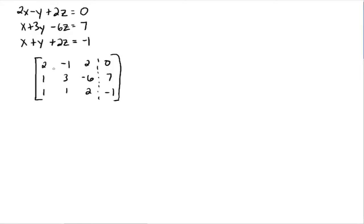Your goal is to get ones on this diagonal, zeros everywhere else, and your answers will appear on the other side of the dashed line. The first goal is to make the first entry a one. You could multiply through by half, as in the previous examples, or you could interchange two rows — remember, that's one of the three allowed matrix operations. Right now I'm going to interchange row one and row two, which puts a one right where I want it.